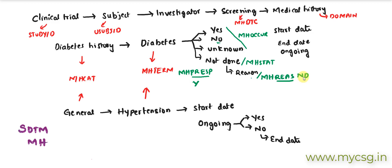We do not have variables like MHPRESP, MHOCCUR, MHSTAT, and MHREASND for the general medical history, because those are only required for pre-specified conditions. For diabetes, we will have a record even if a subject reports 'no', making sure it is captured as 'no' in the MHOCCUR variable.